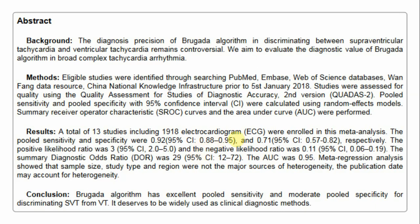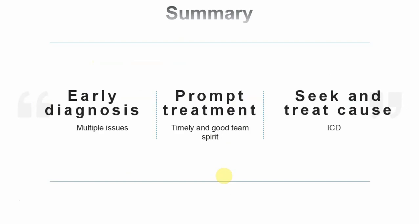The authors suggested that the Brugada criteria are an excellent tool for diagnosing VT and differentiating it from SVT. The criteria can feel complicated, but if you practice applying these four steps on real-life ECGs repeatedly, it becomes manageable. Many patients will require cardiology admission for AICD depending on their underlying condition.